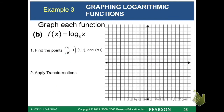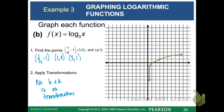Part b: we're graphing f of x equals log base 3 of x. Pause the video and try this one on your own. So we find the three points: 1/3 comma negative 1, 1 comma 0, and 3 comma 1. Again, we didn't have h and k values, so no transformations. Those three points give us our graph.